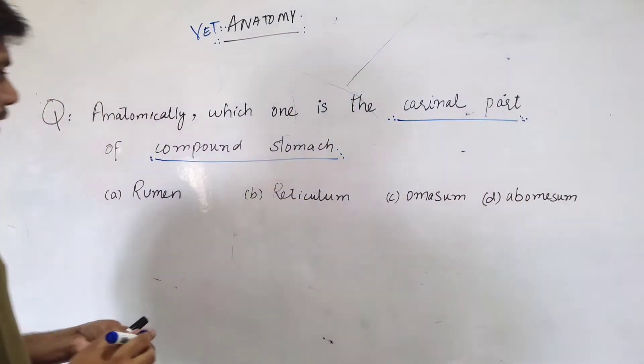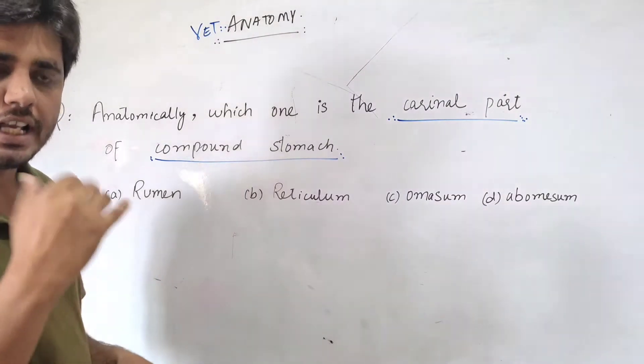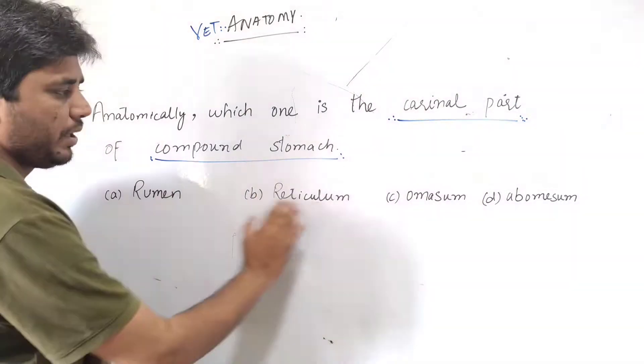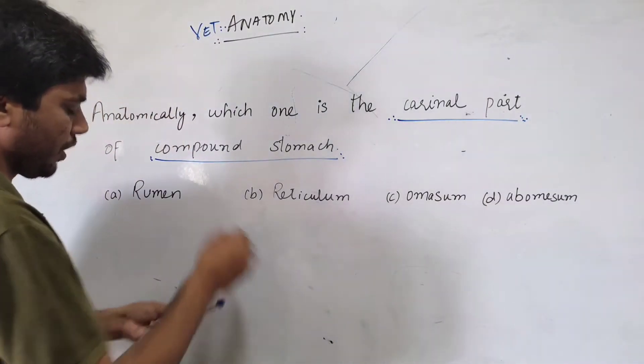It is very simple. You know very well a compound stomach, which is also known as ruminant stomach, has four parts: rumen, reticulum, omasum, and abomasum, which are the options of your question.